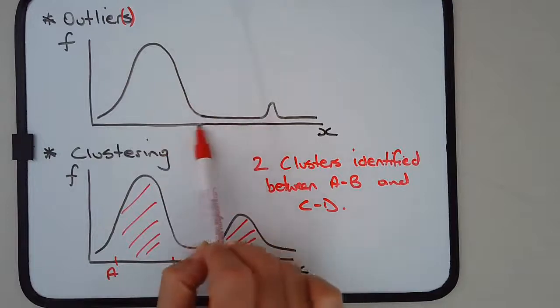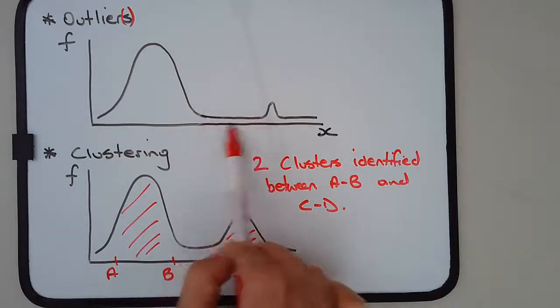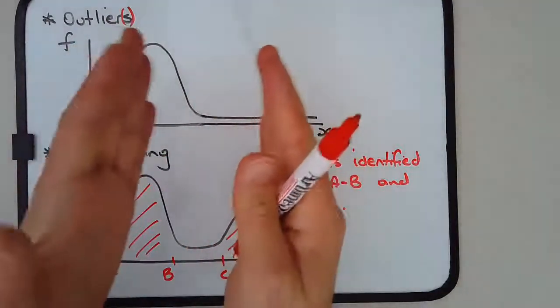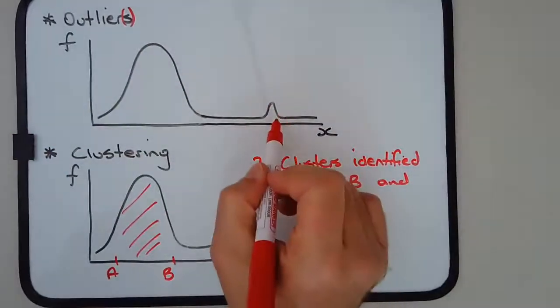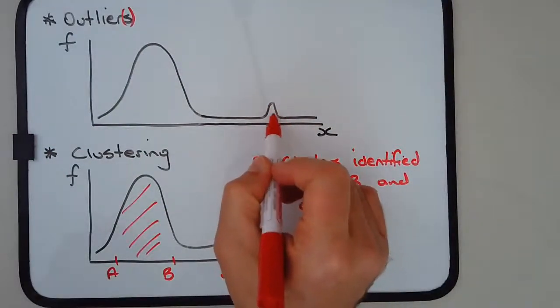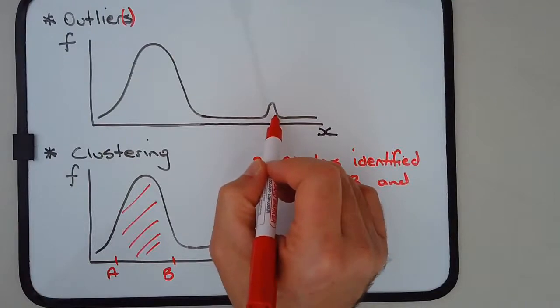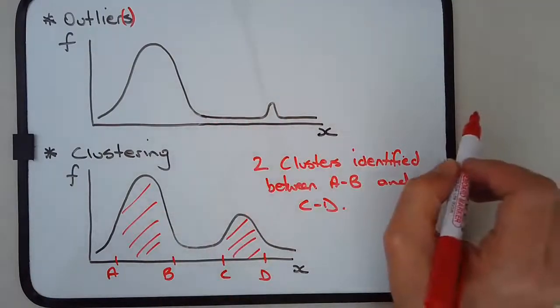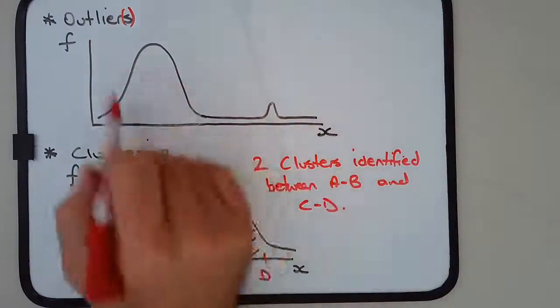There'd be nothing, absolutely nothing for a certain gap of nothing. And then you might have one data item or one score appearing on its sort of lonely self way off. So clearly, clearly removed from the main group.